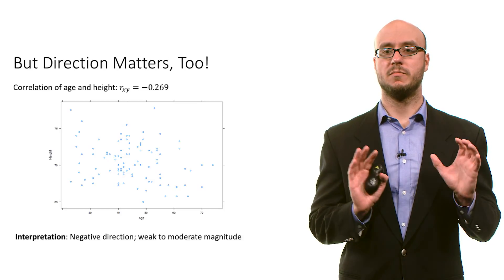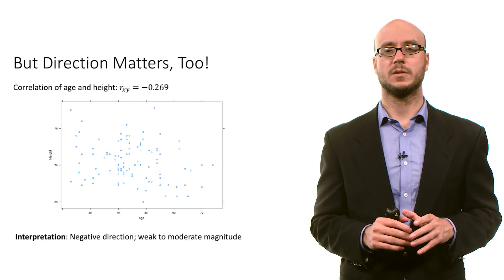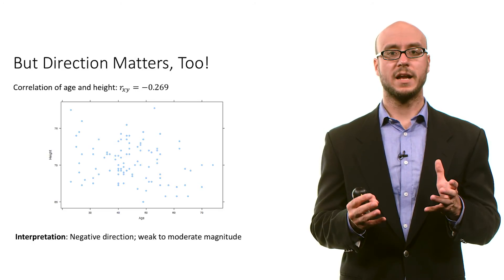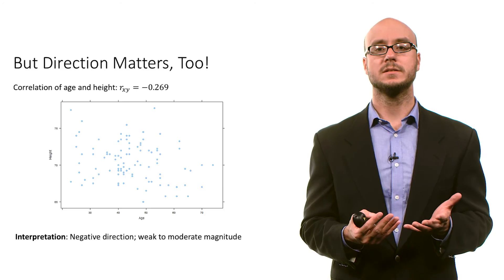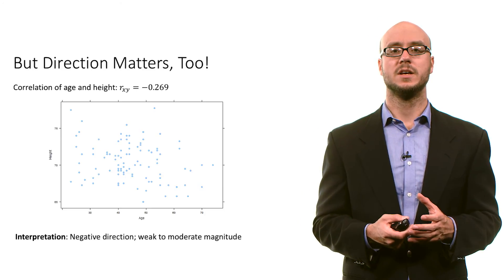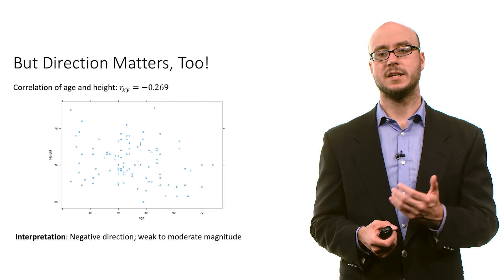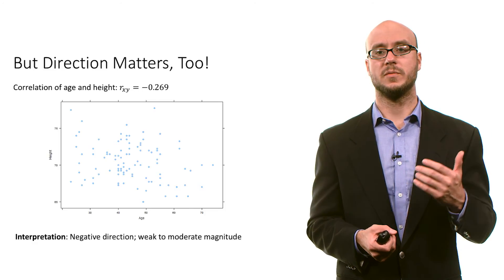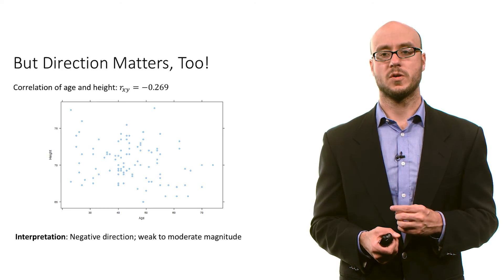But of course, direction matters too. We've looked at positive linear relationships so far, but here's a negative relationship. If we look at the correlation of age and height, we get this correlation coefficient of negative 0.27. And you can see that in the scatter plot — the pattern seems to go from the upper left-hand corner to the lower right-hand corner.